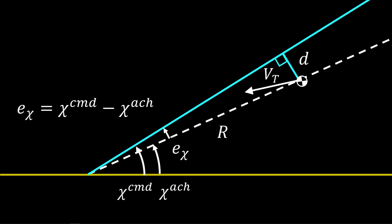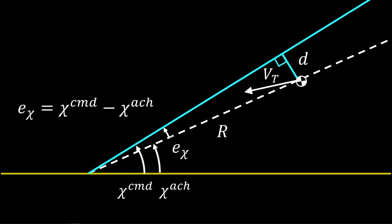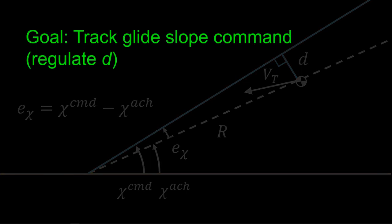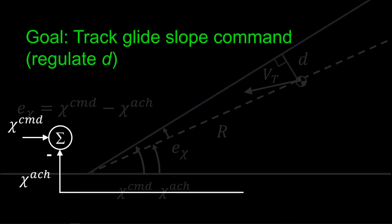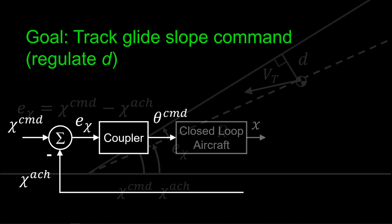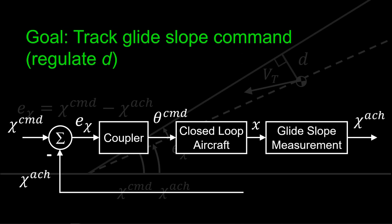The range from the ground is r. From this error, our glide slope control objective is to regulate d, or to drive the glide slope error to zero. The main components in this control loop include the glide slope coupler, the closed-loop aircraft response, and a glide slope measurement system.